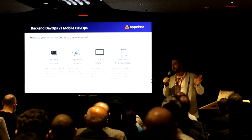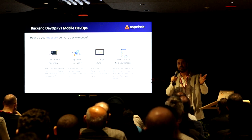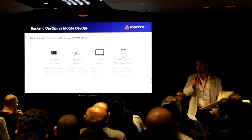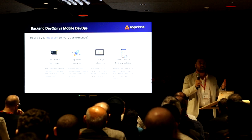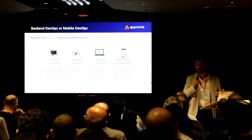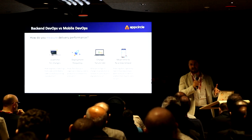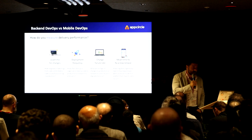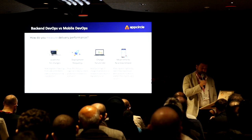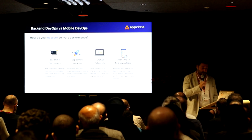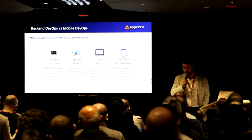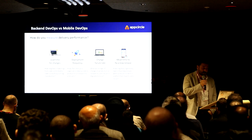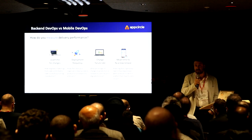We just talked about the basic differences between mobile DevOps and back-end DevOps. So let's try to understand what could be the possible performance indicators. If we do what, then we can increase our performance? These are kind of the DORA metrics that we can use to measure performance — like lead time for changes, deployment frequency, failure rate change, and mean time to fix a new release. How long does it take to go from code commitment to code successfully running in production?